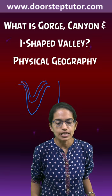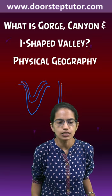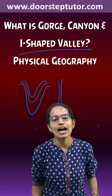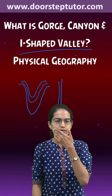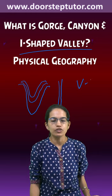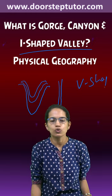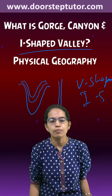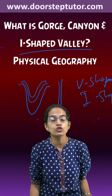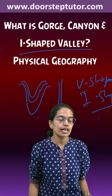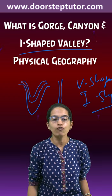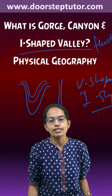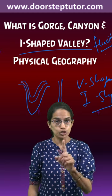And finally, when it gets very steep and deep, it is known as an I-shaped valley. So from V-shaped to I-shaped, all of them are features of fluvial landforms, and that too erosional.